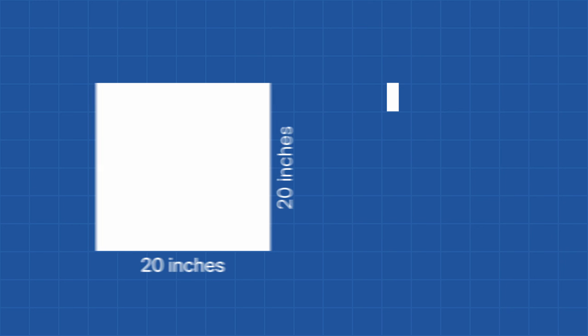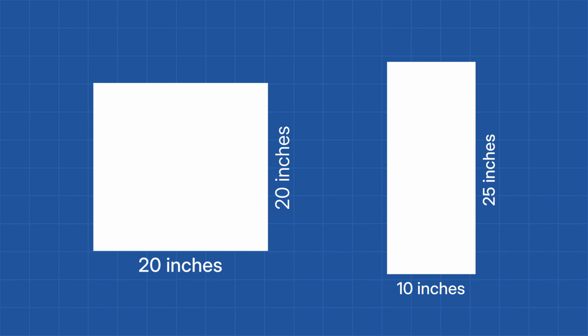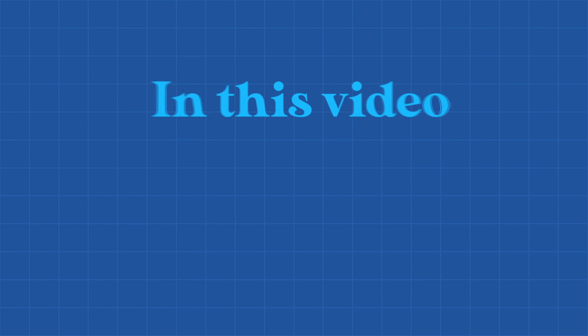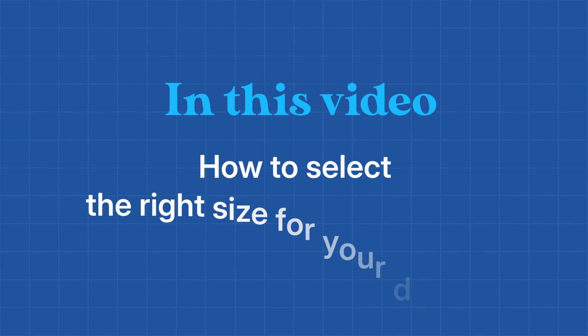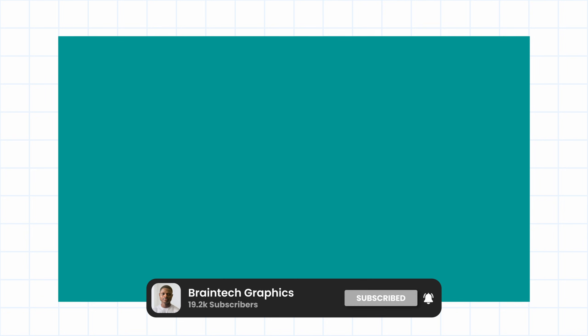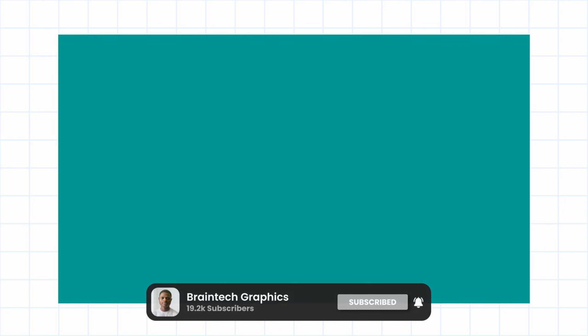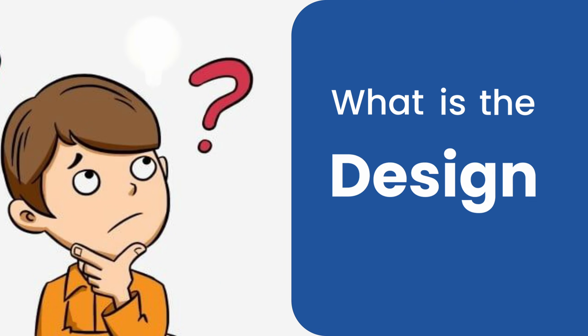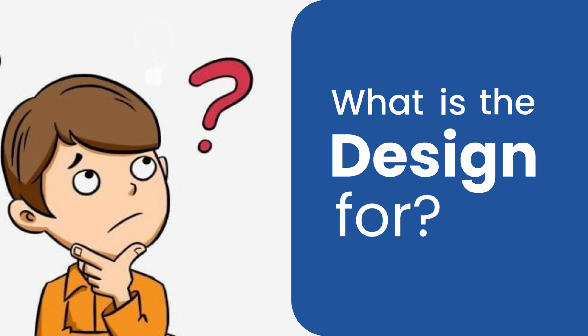Should you use 20 by 20 inches, 10 by 25 inches, or what if you use 72 DPI instead of 300 DPI? How can you make the design work for all the sizes the client needs? In this video you will learn how to select the right size for your design, and later I'll show you how to change the size to fit every other size your client will need. Before choosing any size, ask yourself one question: what is this design for?